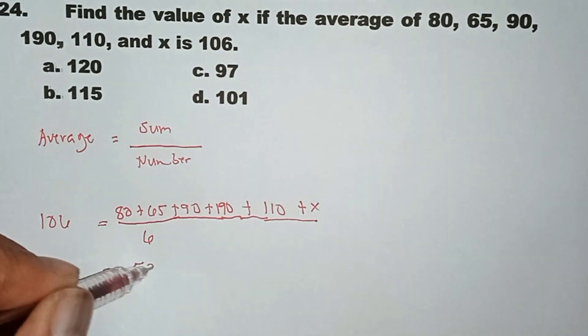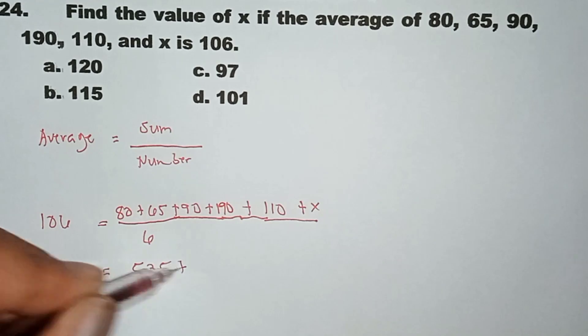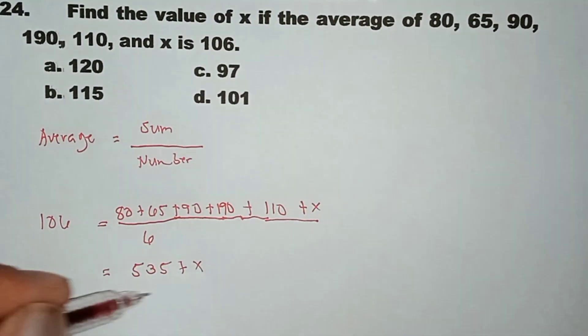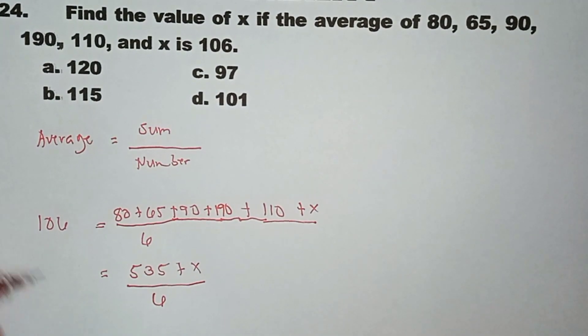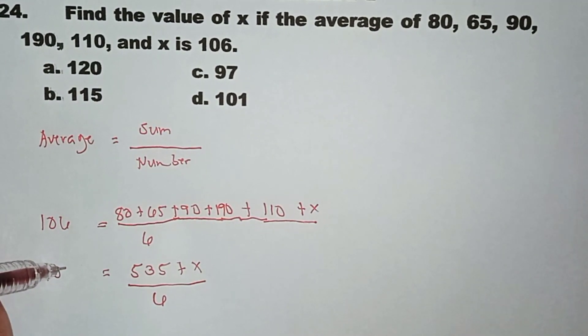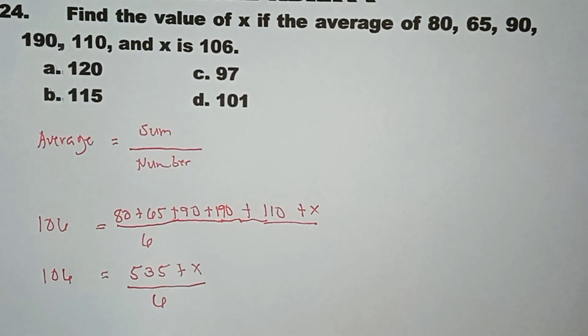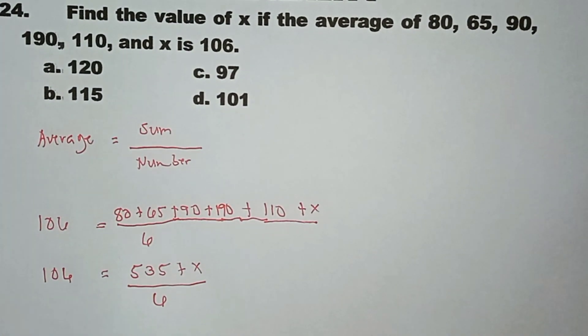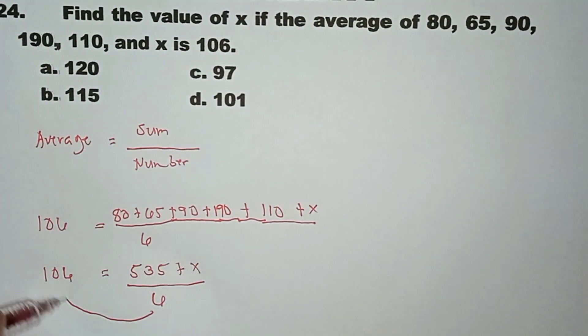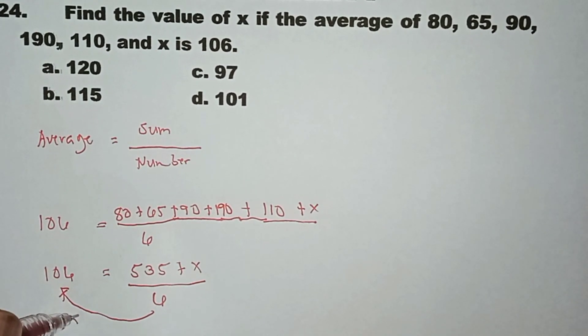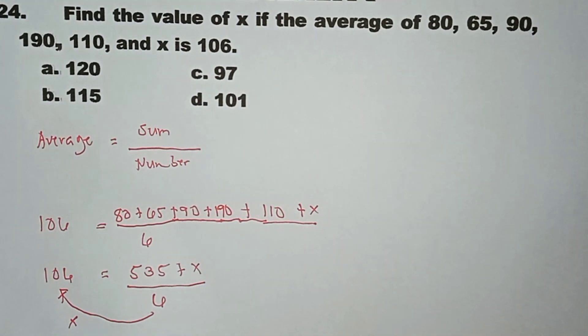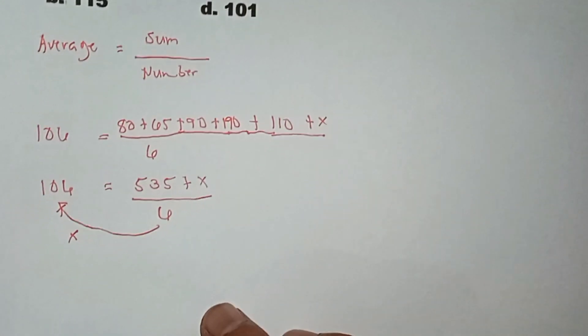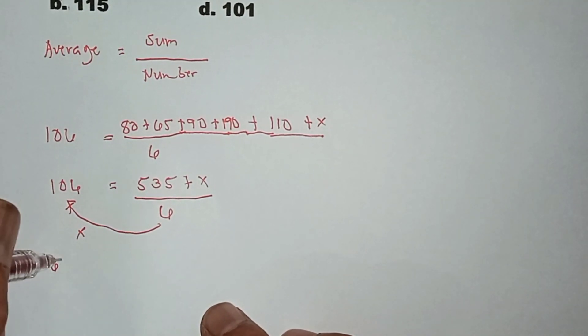535 plus the x over 6. Okay, then yung average now 106 na. 106, para ma-extract natin ito, we need to multiply this 6 sa 106. So 6 times 106, that is equal to, that is equal to 636.